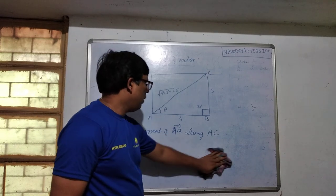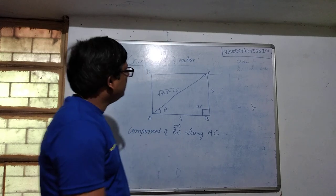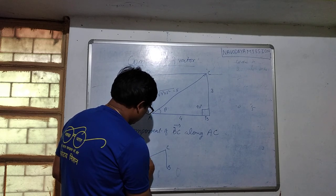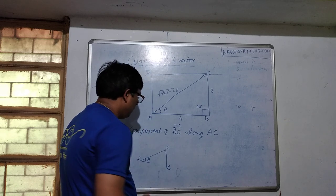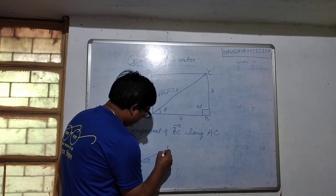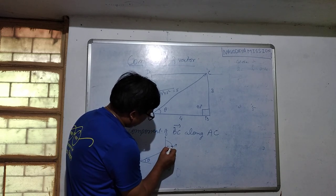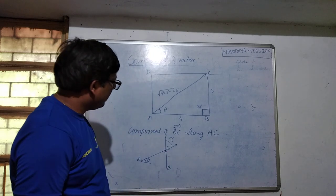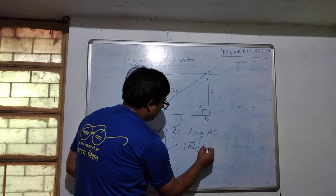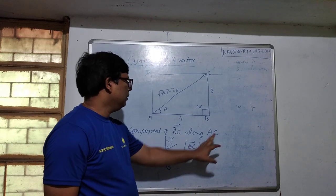Another problem: what is the component of BC vector along AC? BC is from B to C, and AB makes angle theta with AC. We need the angle that BC makes with AC. If we extend BC along the AC side, we can see BC is making some angle alpha with AC. So the magnitude of the component will be BC × cos alpha.